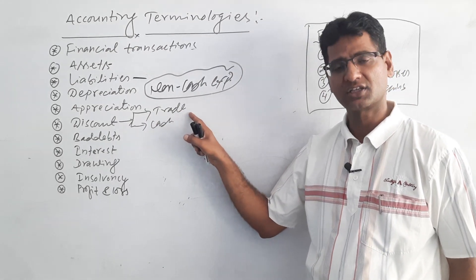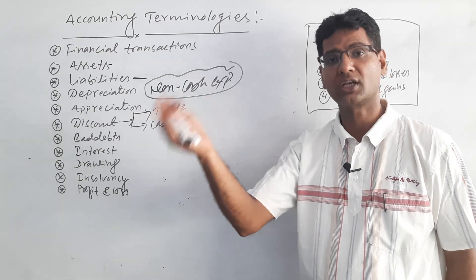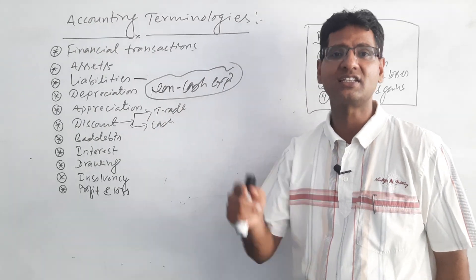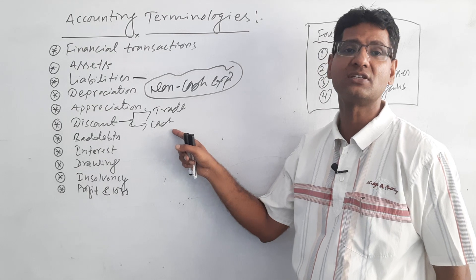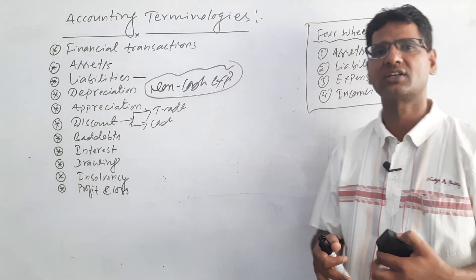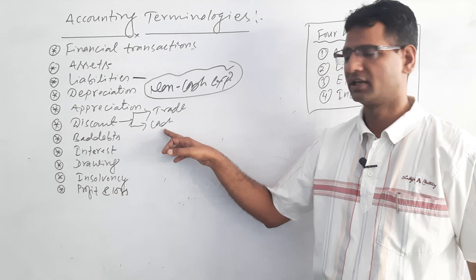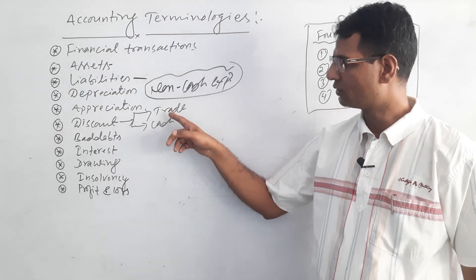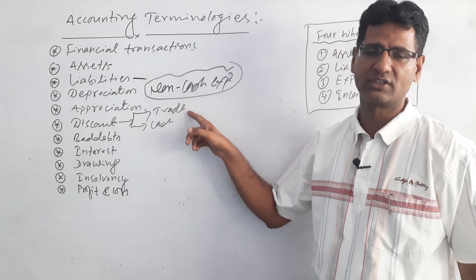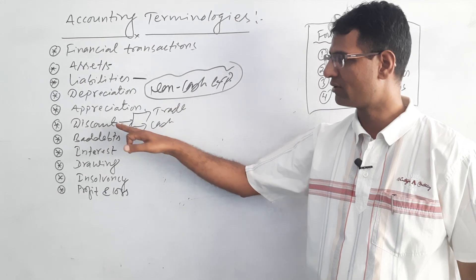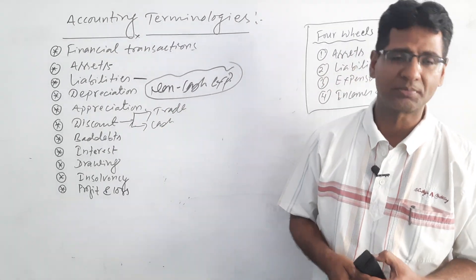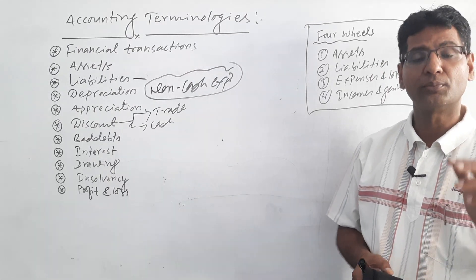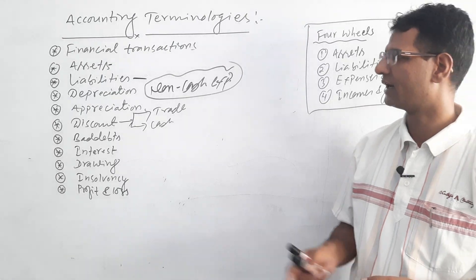Cash discount is a facility given by creditors to debtors for quick payment. Discount is a facility, not compulsory — provided by sellers to buyers or creditors to debtors for motivating bulk purchases and quick payment.